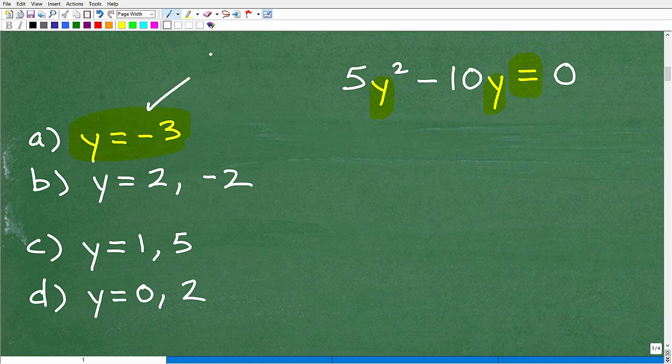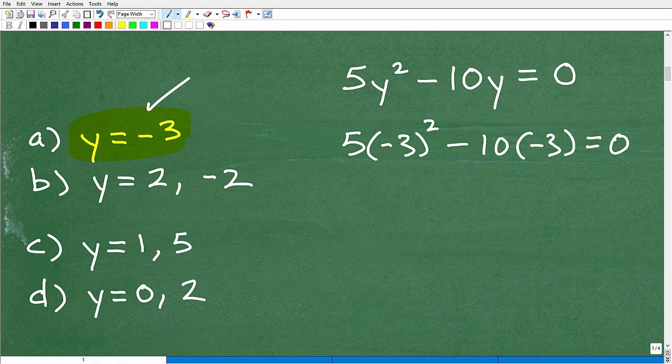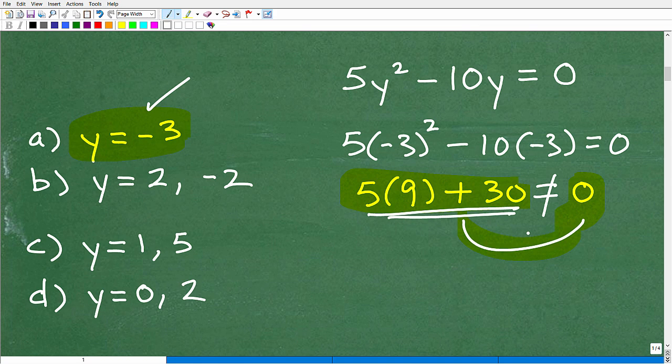So let's just test this out. Y equals negative 3. If this is the answer, then this has to work. So we have to go 5 times negative 3 squared minus 10 times negative 3. We have to see if this equals 0. So negative 3 squared is 9, that's 5 times 9. Now this is going to be minus a minus 3 which makes this positive 30. Now I'm going to just stop. Do I have to continue doing this math to be satisfied whether this is going to equal 0 or not? This is clearly not going to equal 0, so I can just stop right there. I'm like, if the answer must make the left-hand side equal to the right-hand side, you're out.